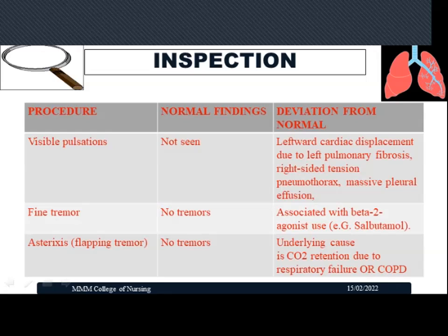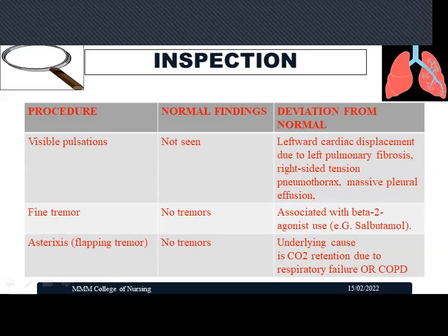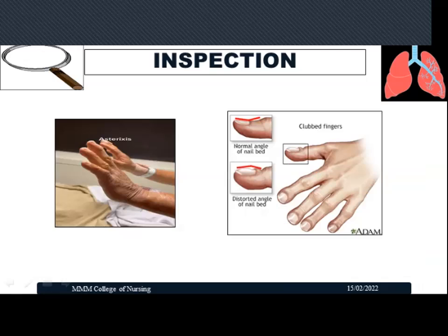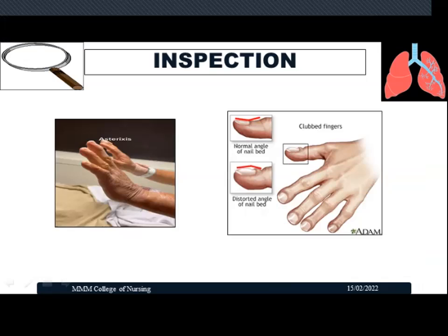Check for fine tremors in the hands and fingers. Normally no tremors are visible. If the patient has been using beta-2 agonists such as salbutamol for a long time, fine tremors may appear. Also check for asterixis — a flapping tremor. Ask the patient to hold out their hand and look for flapping tremors in the fingers. Asterixis is associated with carbon dioxide retention due to respiratory failure or chronic COPD.